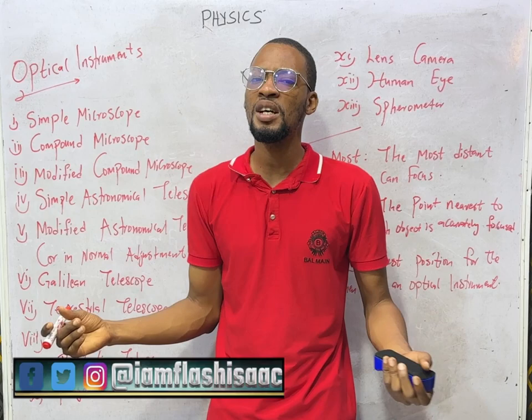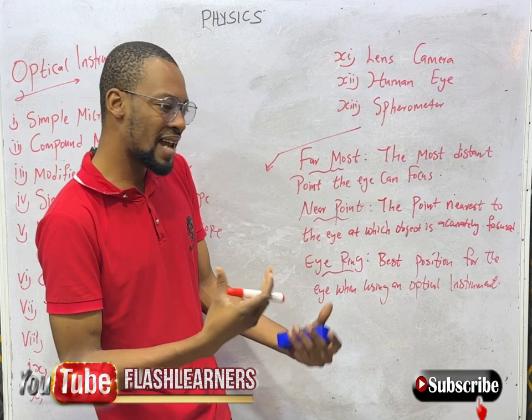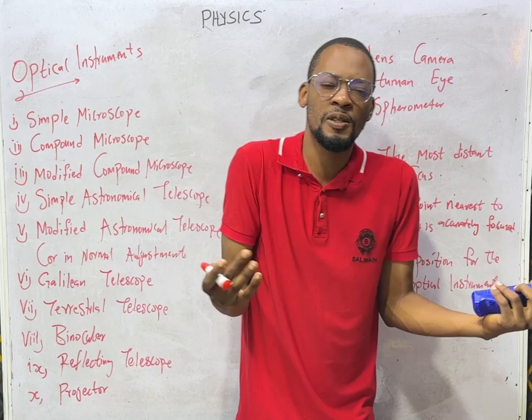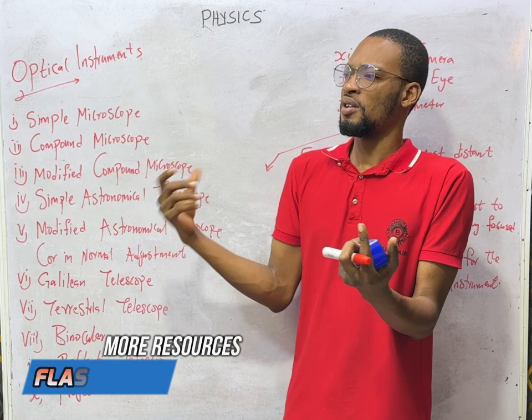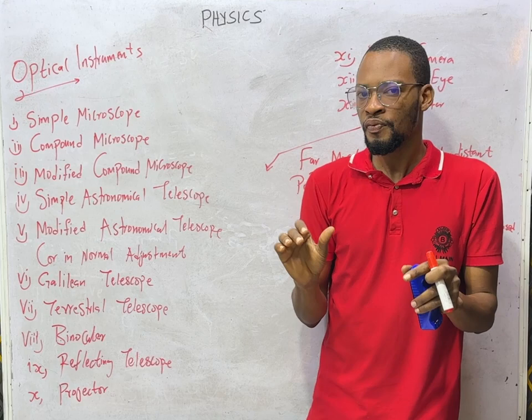In this episode, we shall be looking at optical instruments. Now, ladies and gentlemen, some lights are visible to the eyes. In the spectrum, you have visible lights. Even the light from the sun, you can see the light. These are visible lights, or the light from your bulbs, from car headlights — these lights are visible.